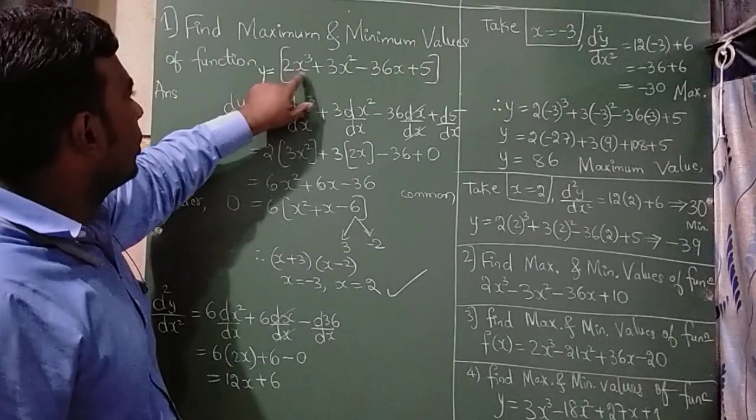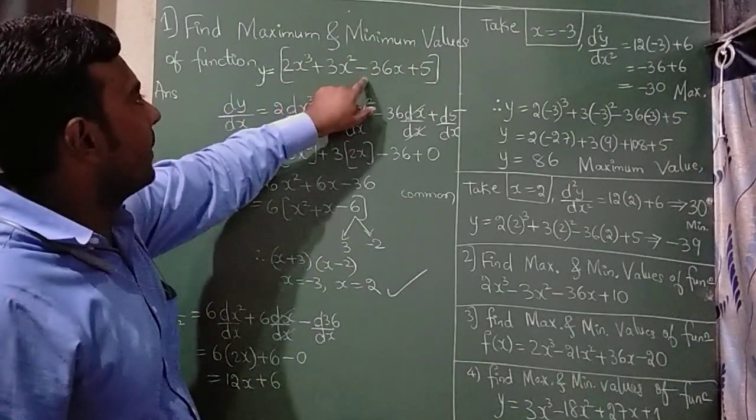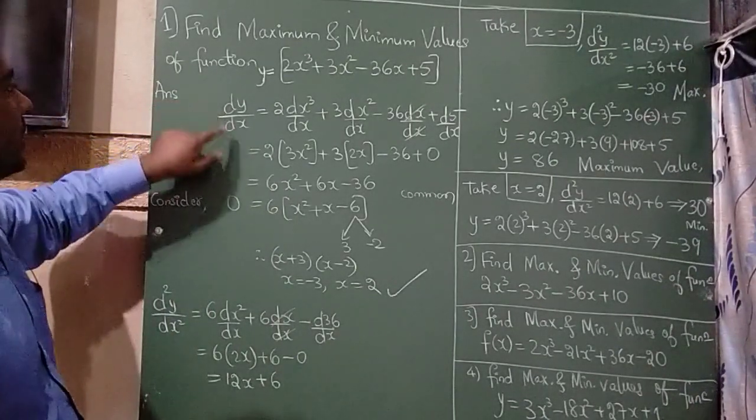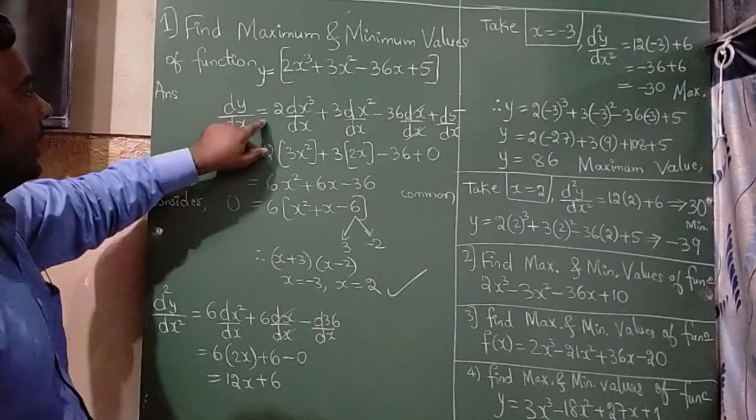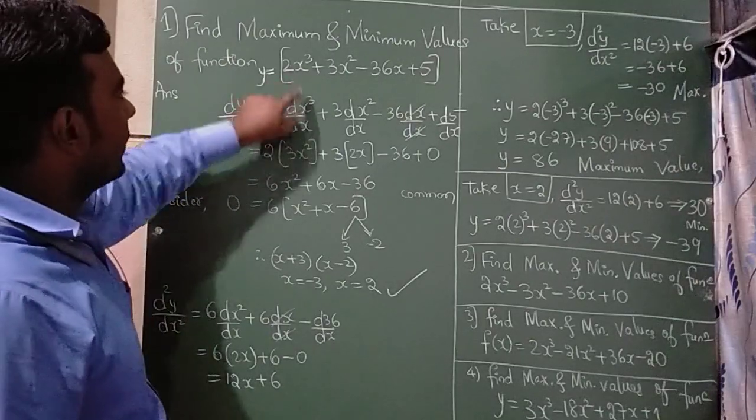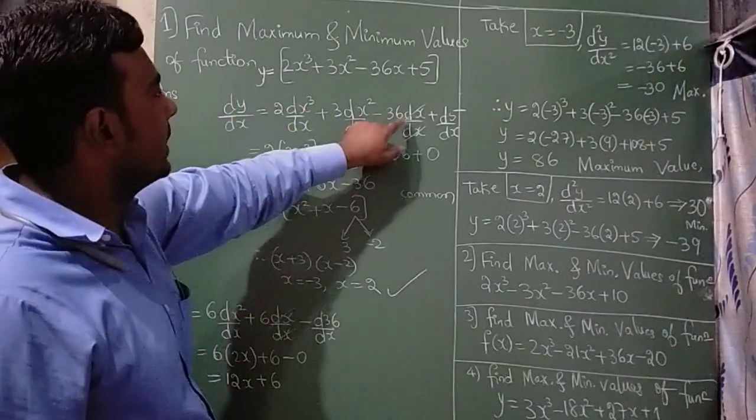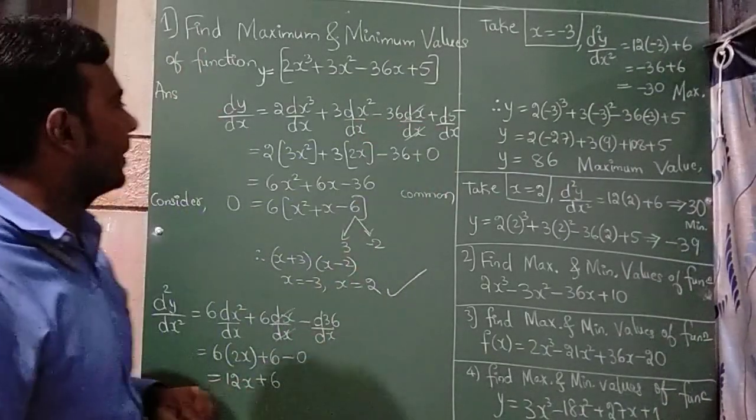y = 2x³ + 3x² - 36x + 5. Now you need to differentiate it with respect to x. dy/dx = 2(d/dx of x³) + 3(d/dx of x²) - 36(dx/dx) + d/dx of 5.